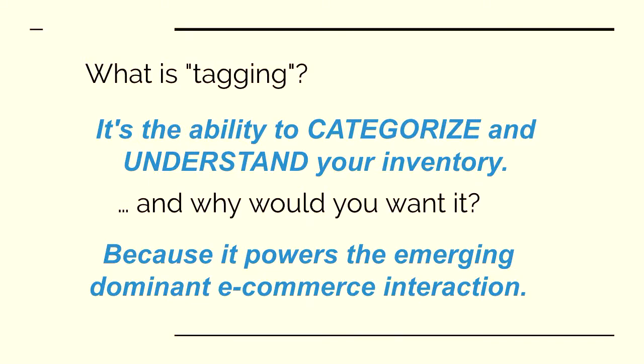So when I say what is tagging — it is the ability to categorize and better understand our inventory so that we know more about it, and so that our users can interface more easily with it. It powers the emerging dominant interaction for e-commerce search. This is where Eventbrite was — for the past several years, we have a categorization system, but organizers don't really use it. Users need categories, but they don't have access. So we're looking at ways to create tagging for Eventbrite.